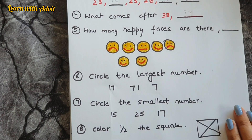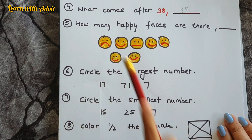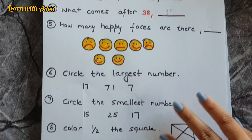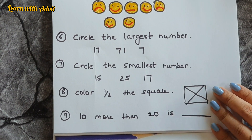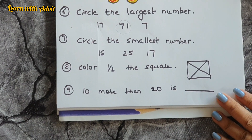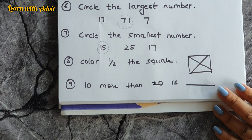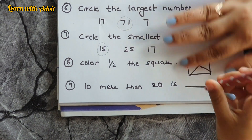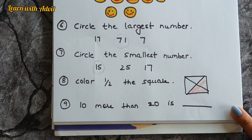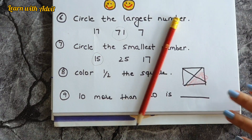There are a lot of smileys — you have to count only the happy faces and write the number. One, two, three, four — four happy faces. Very good. Circle the largest number — it's 71. Circle the smallest number — it's 15. Now color half of the square. This is the full square, you have to color only the half. The other half will make the full square. And 10 more than 20 is 30.